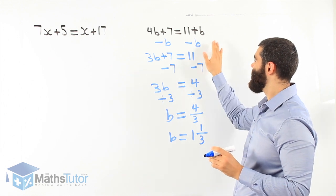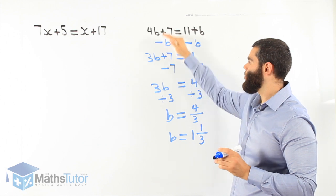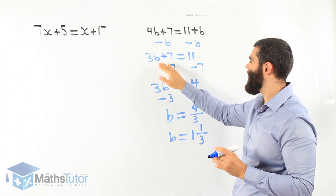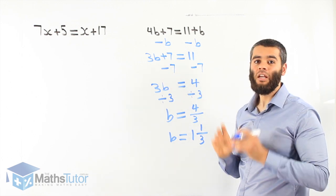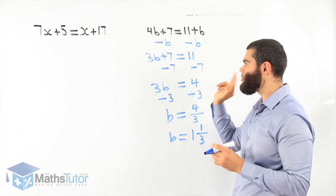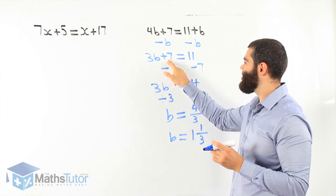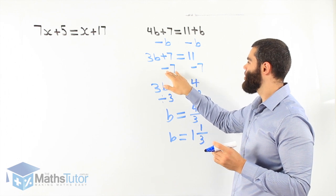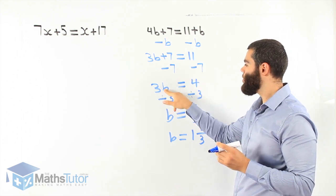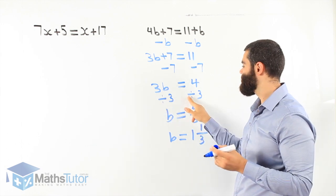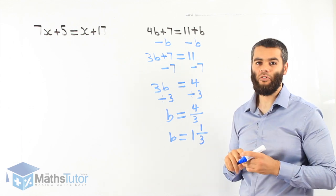So again, we make sure we take away and get rid of the pronumeral from that side so pronumerals are only on the left: minus b, minus b. We have 3b plus 7 equals 11. Which do we get rid of first — the 3 or the 7? We get rid of the one furthest away from the pronumeral, which is the 7. Plus 7 becomes minus 7 on one side, minus 7 on the other. We're left with 3b equals 4. 3b is 3 times b, so divide by 3 on both sides. b equals 4 over 3, which is 1 and 1 third.